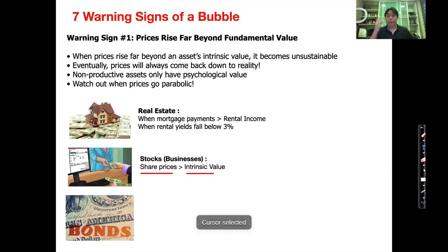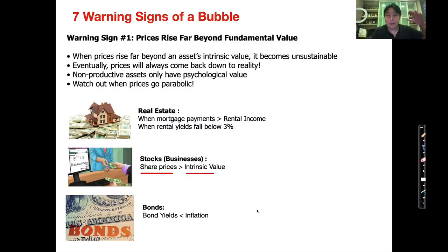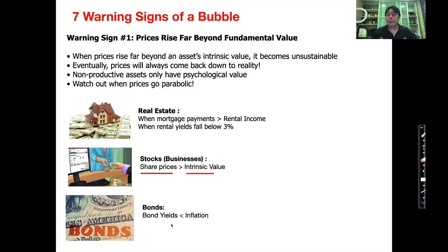How about bonds? When bond yields — the bond interest rate — fall below inflation, bonds are expensive. I talked about treasury bonds being in a bubble about two years ago, and sure enough the bubble burst late last year when the 10-year treasury bond yield fell below 1%. When bond yields go way below inflation, bonds are expensive because if you invest in a bond you are not even beating inflation, and from a long-term perspective bonds will collapse.